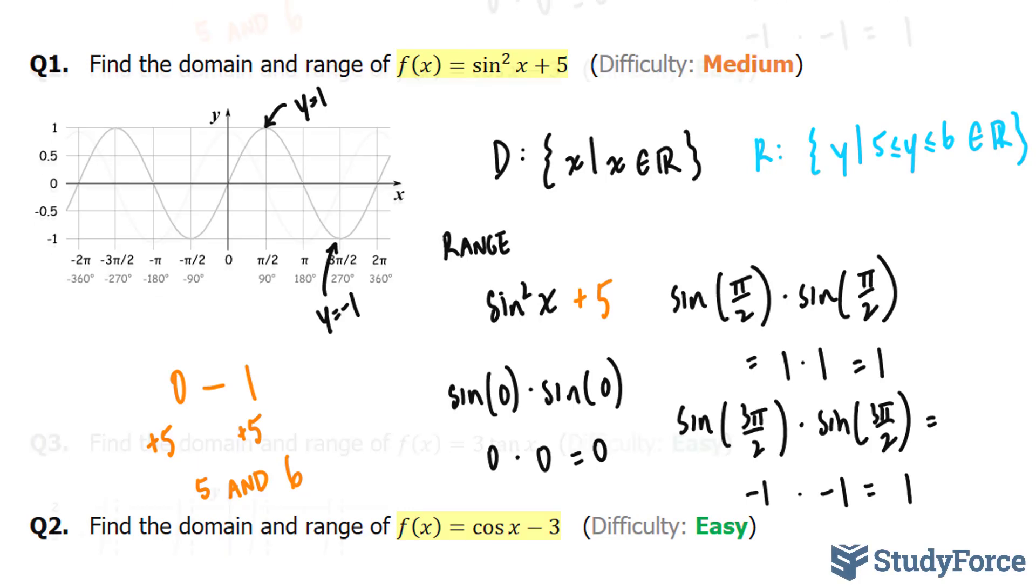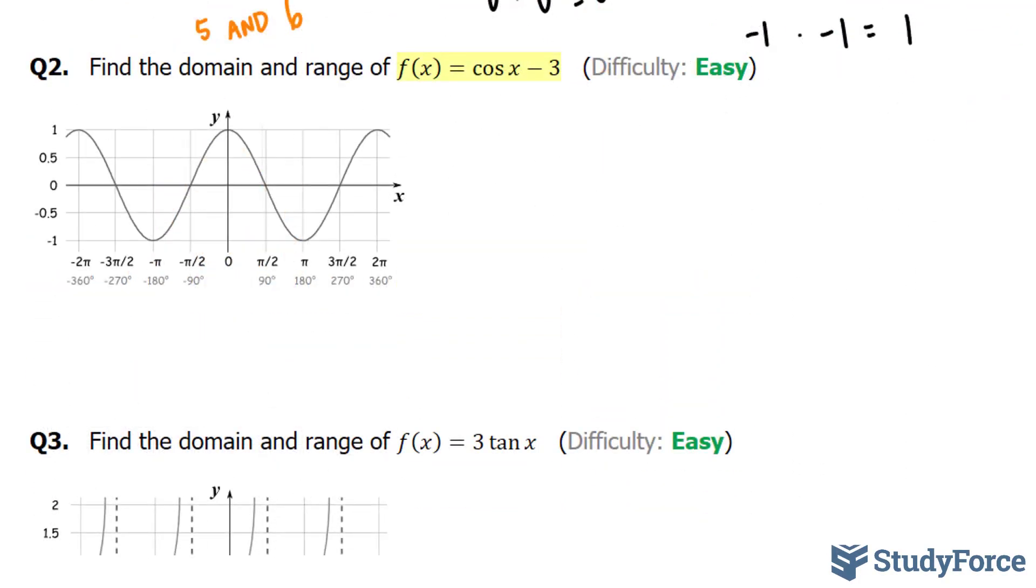Let's move on to question number 2. They're asking us to find the domain and range of f(x) = cos(x) - 3. To do this problem, we'll start by looking at the wave of a cosine function.